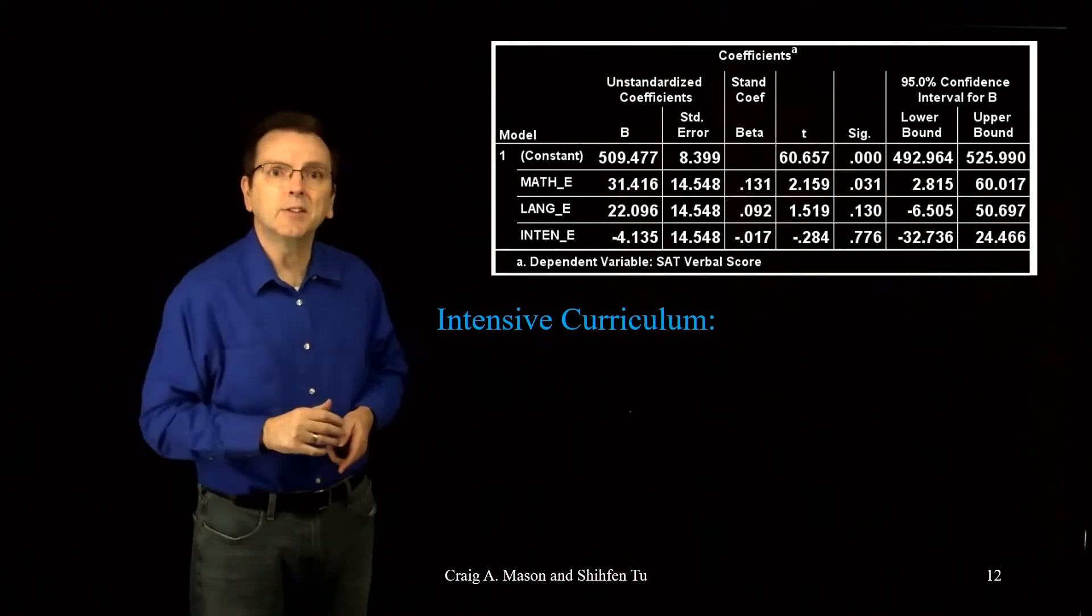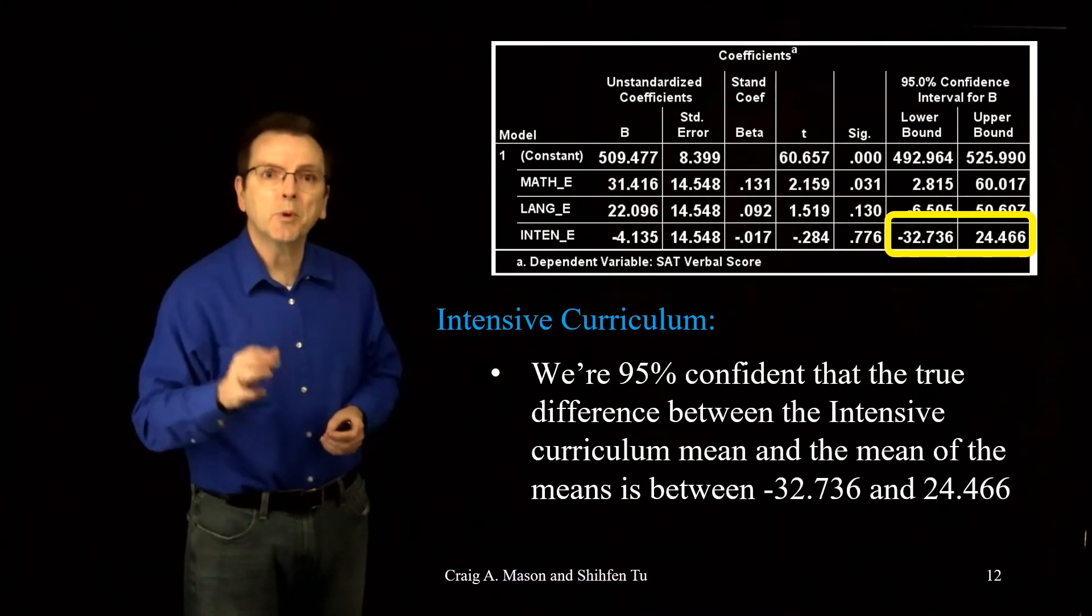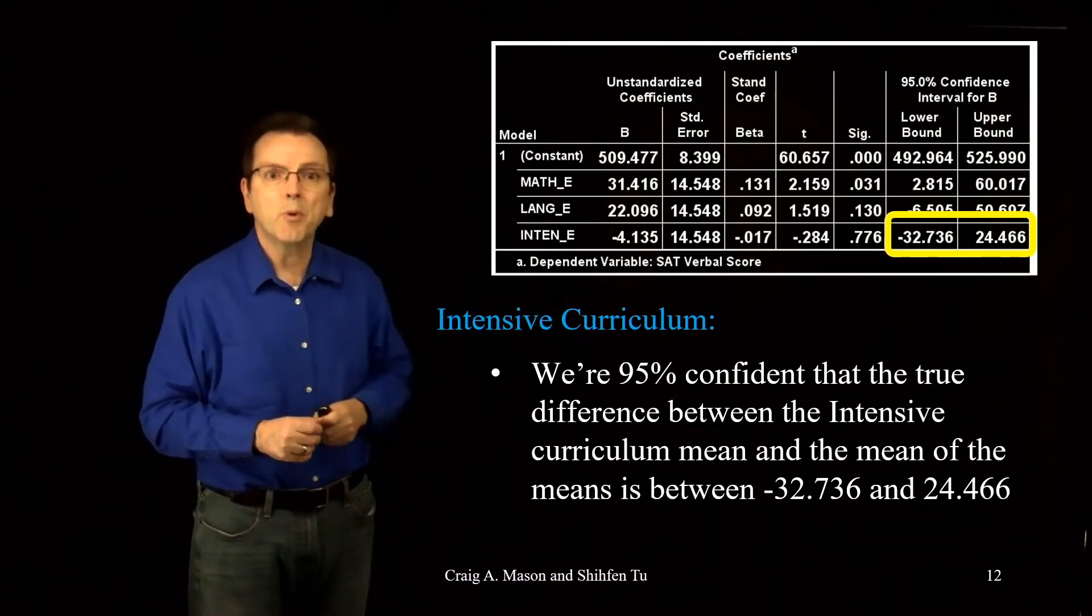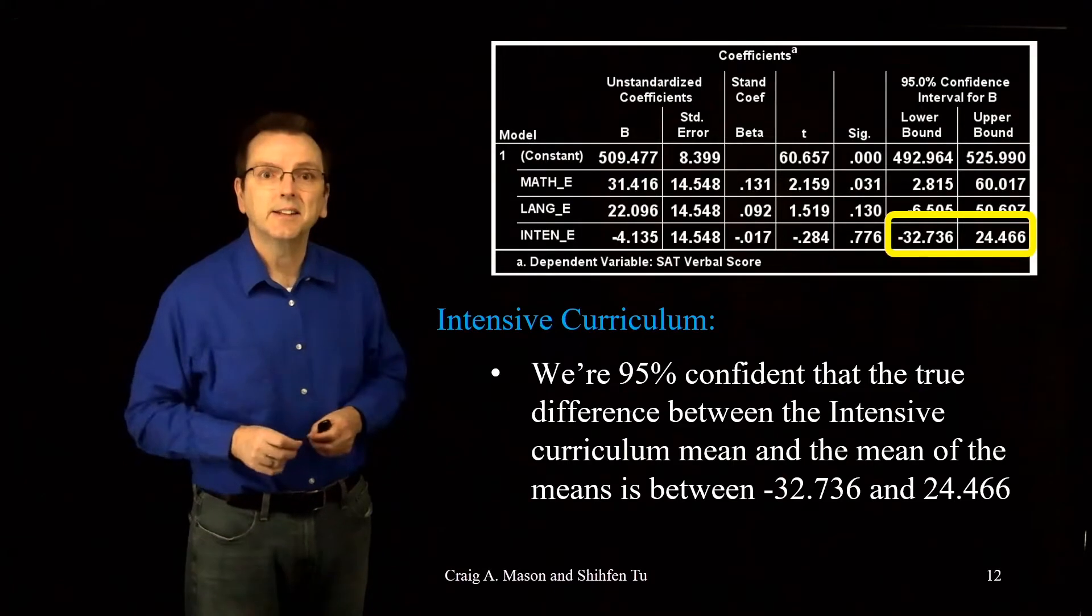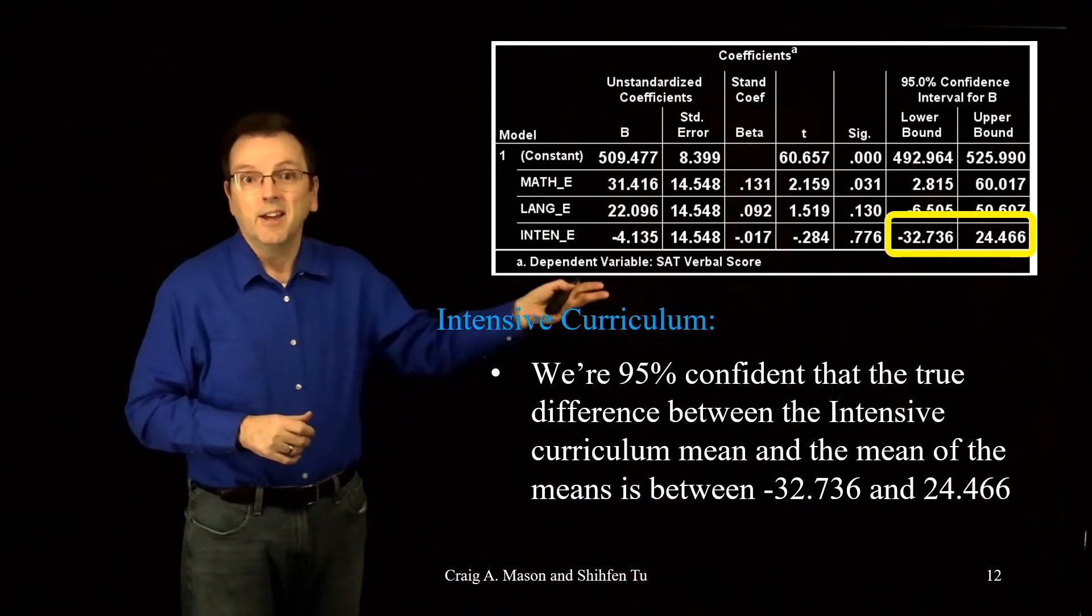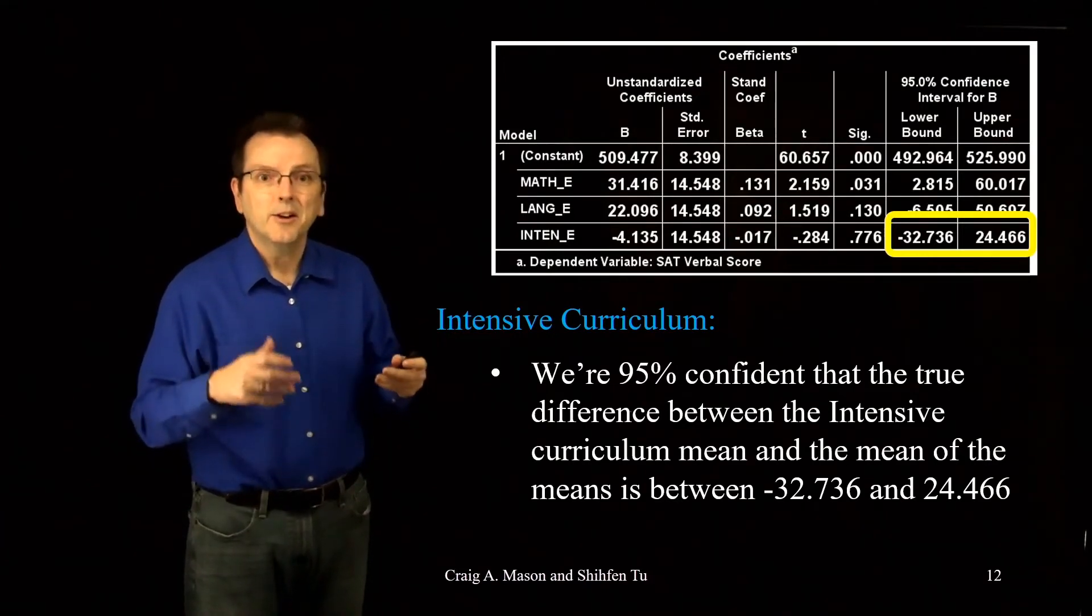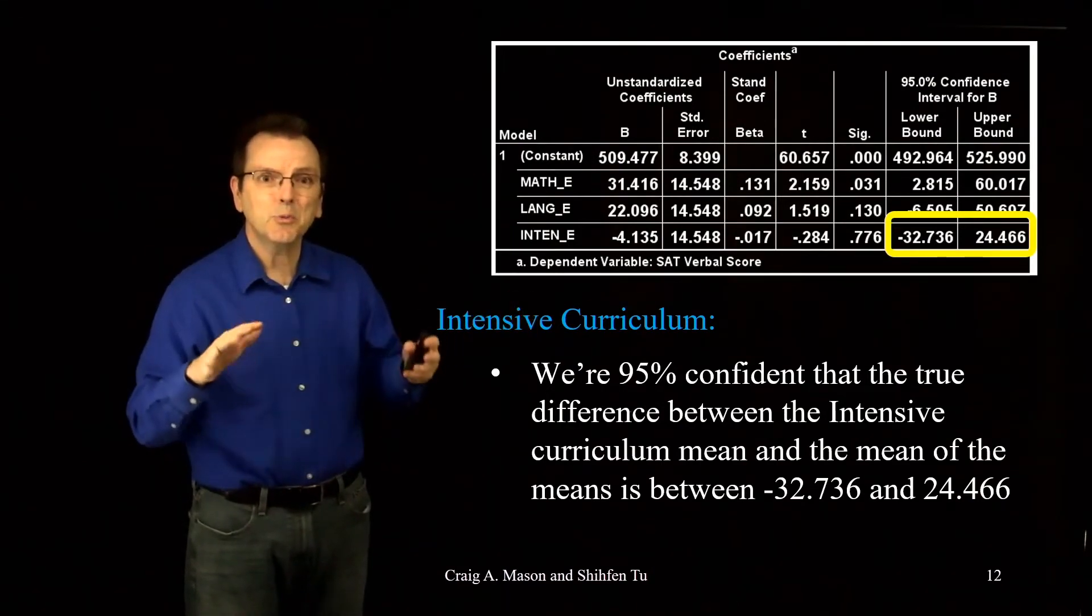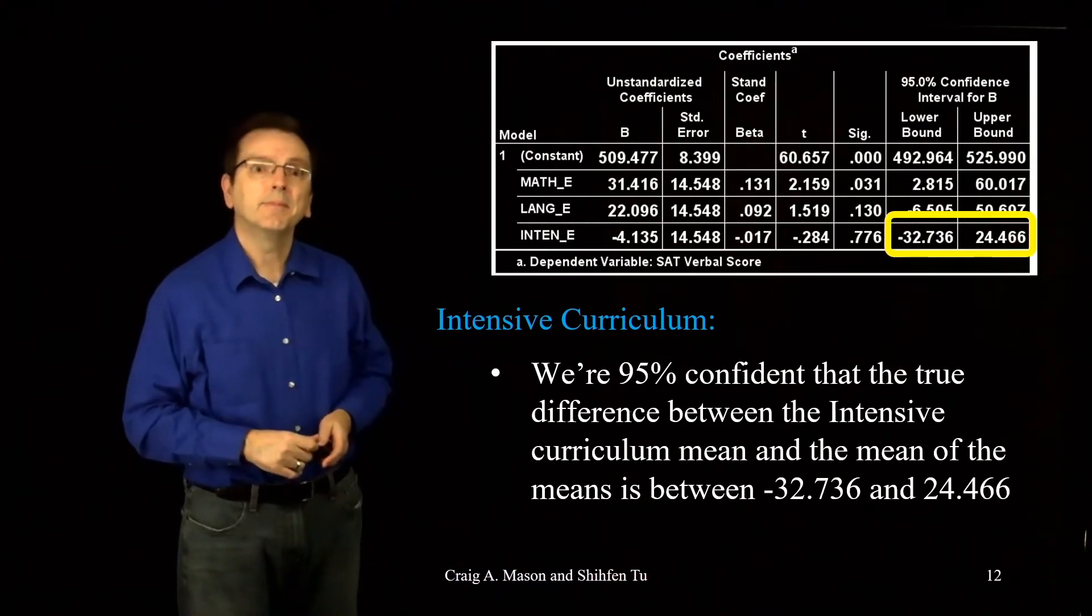Now, if we look at the confidence interval, we see that we're 95% confident that the true difference between the intensive curriculum mean and the mean of the means is somewhere between negative 32.736 and positive 24.466. That's the range we would expect to see the true difference in the population. And zero is kind of close to the middle of that range, isn't it? So again, notice that that point estimate of 4.135 seems a little squishy. There's a lot of potential error in that point estimate.